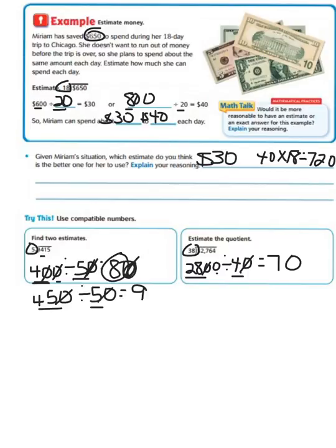Or, we can go with 2400 divided by 40. We have a basic fact of 24 and 4, so 24 divided by 4 equals 6. Cancel out our zeros, leaves us with 1 zero, so 60 or 70.